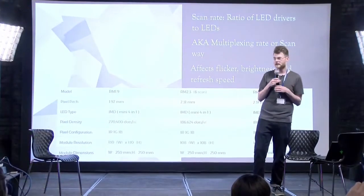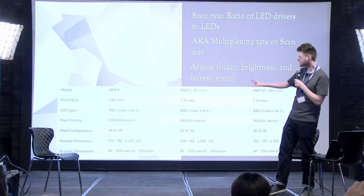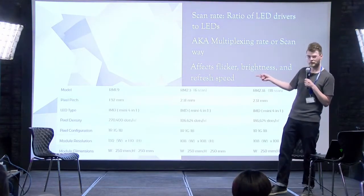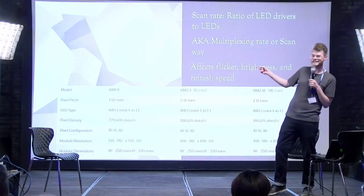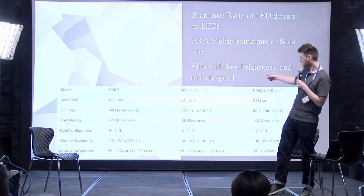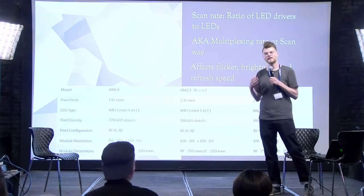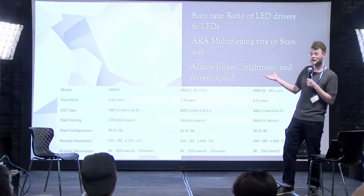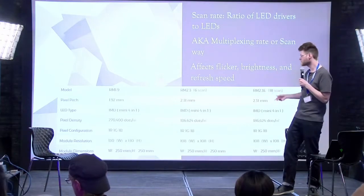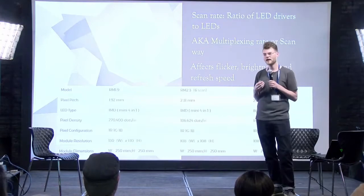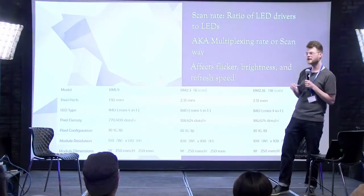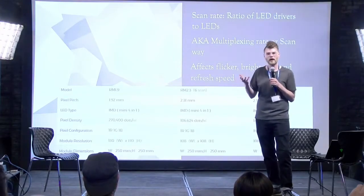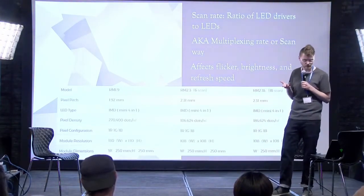We're starting to see manufacturers acknowledge this. One interesting product lineup has a 2.3mm pitch panel at 6-scan and a 2.3E at 18-scan — that's a 1:6 versus 1:18 ratio. They're ostensibly identical products but the scan rate is different. The 6-scan version is probably two to three times more expensive, but it's going to perform significantly better on camera. Anything beyond a 1:16 scan and you're starting to roll the dice. A 6-scan panel is going to perform really well — no flicker.